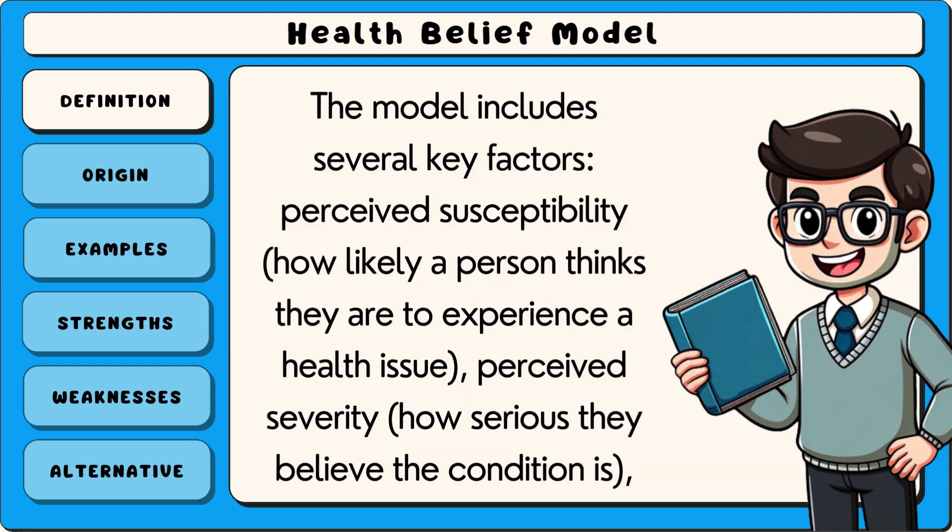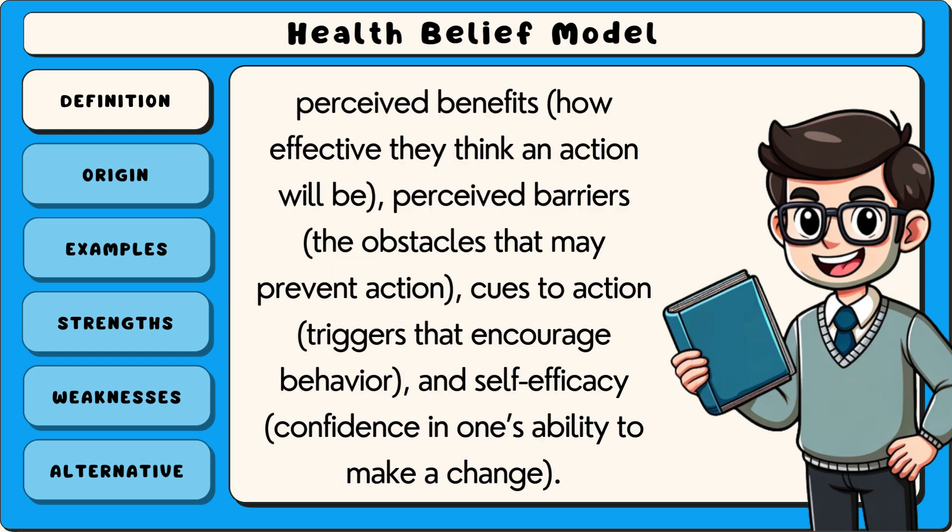The model includes several key factors. Perceived susceptibility — how likely a person thinks they are to experience a health issue. Perceived severity — how serious they believe the condition is. Perceived benefits — how effective they think an action will be.